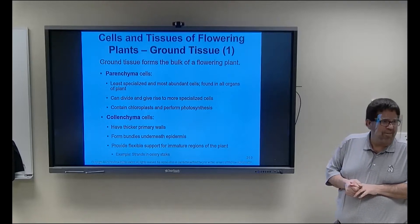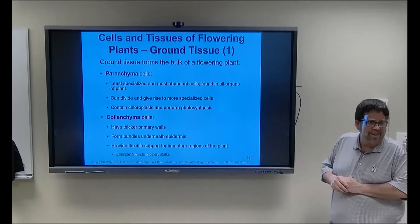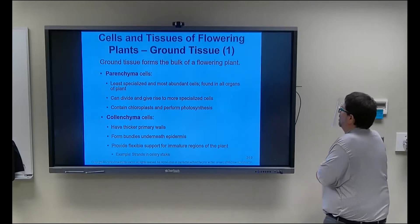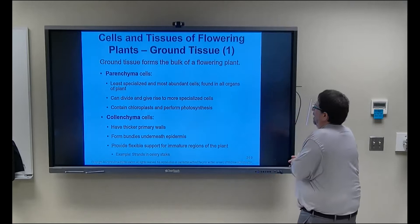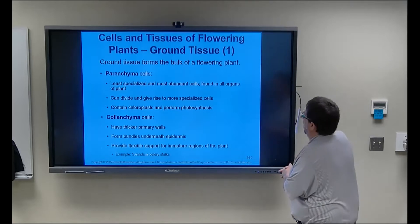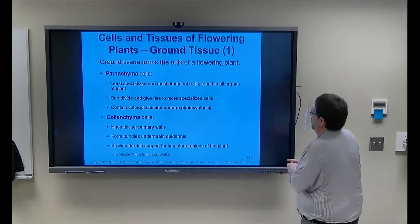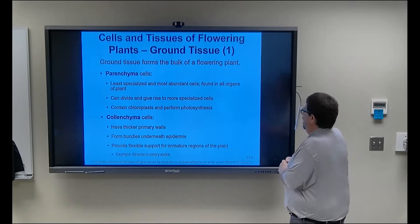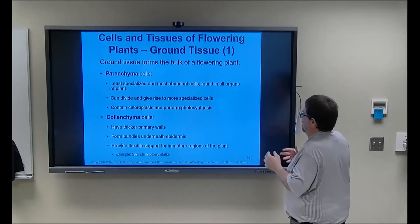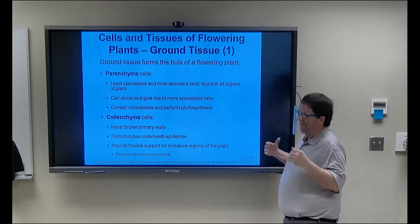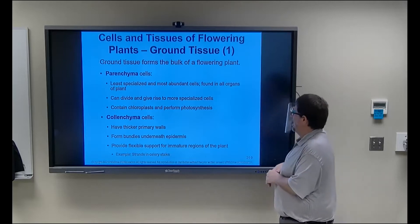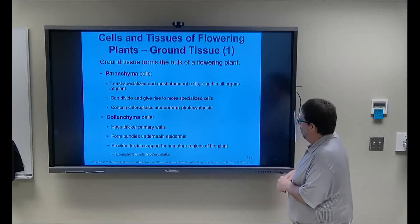Here are our three ground tissues — I didn't make these up: parenchyma, collenchyma, and sclerenchyma. Parenchyma is your generic plant cell — the least specialized, most abundant cell found in all organs of plants. It can divide to become more specialized cells and contains chloroplasts for photosynthesis. This is your typical plant cell.